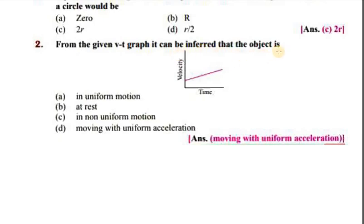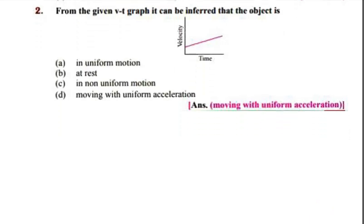From the given v-t graph, it can be inferred that the object is moving with uniform acceleration.